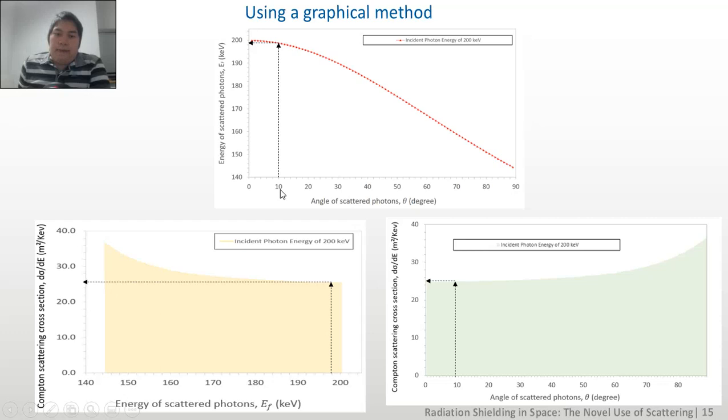For example, let's say at 10 degrees, we have an energy of around 198. And corresponding to that energy, we have this as the probability of finding an electron with that energy. And with the same scattered photons at 10 degrees, we also have this probability of finding a photon with that angle. So, in a way, using a graphical method, you can pick an angle and determine both the energy, and for that energy, we can determine the amount of photons with that energy.